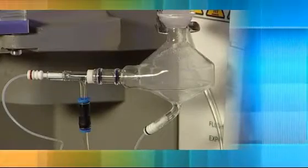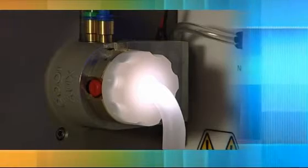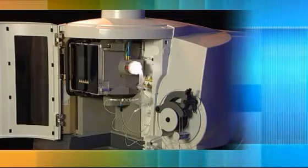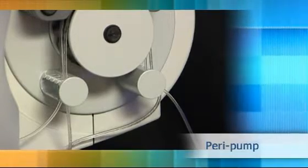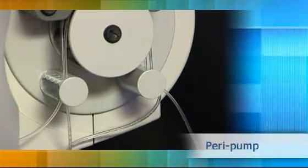The sample introduction components and torch of the ICAP 6000 series have been specifically designed with ease of use and maintenance in mind. The high quality peristaltic pump is easy to access, making replacing tubing a simple task.